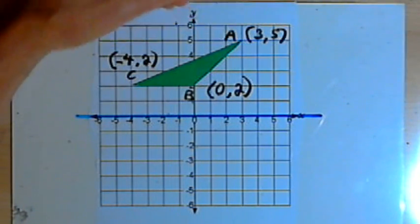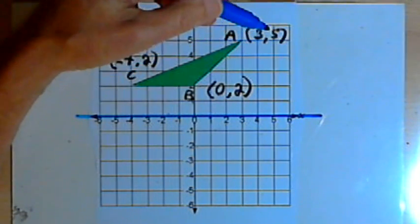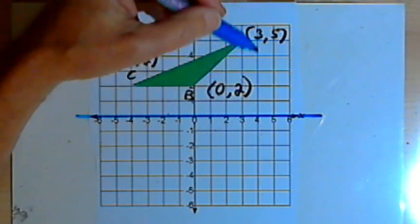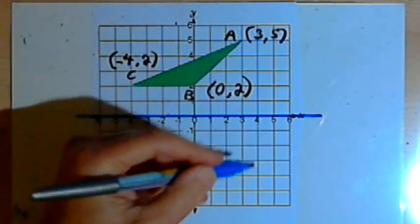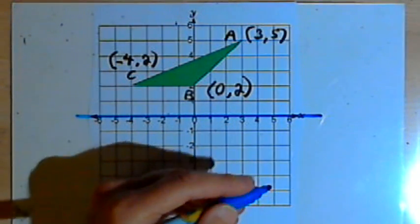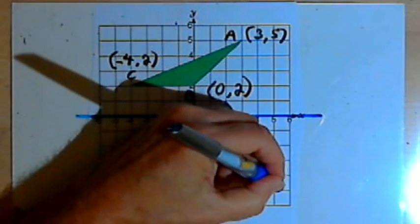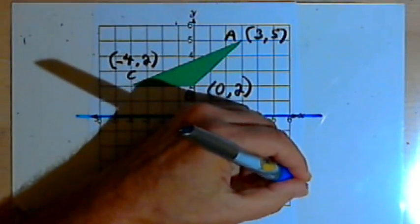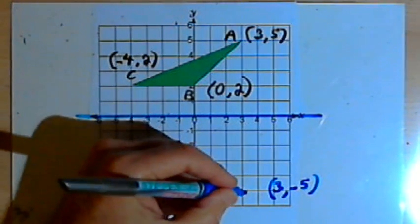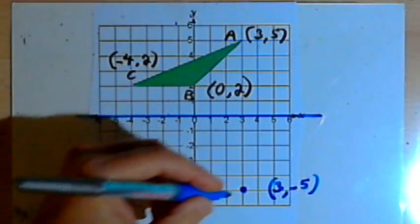So now all I want to do is go 5 units away in the other direction. That would take me to point 3, negative 5. And that point, 3, negative 5, is going to be my point A prime.